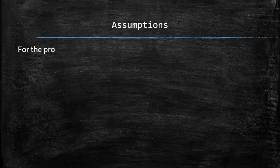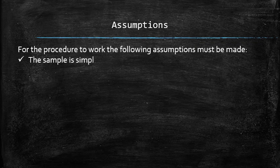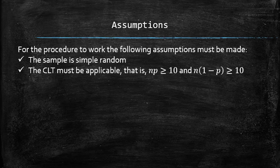For the procedure to work, the following assumptions must be made. The sample is simple random and the central limit theorem for proportions must be applicable. That is, the number of positive responses and negative responses both must be greater than 10.